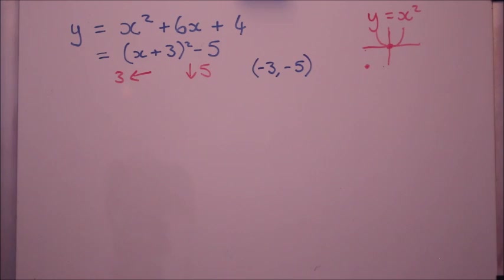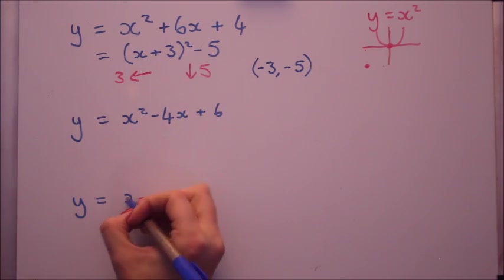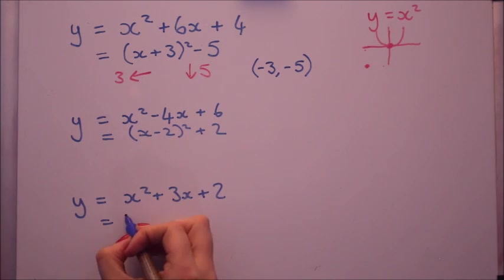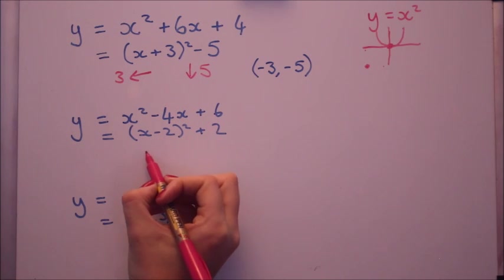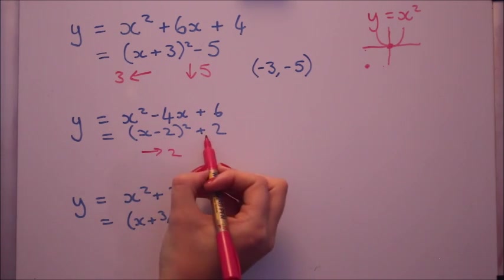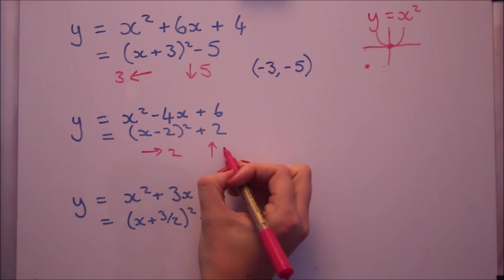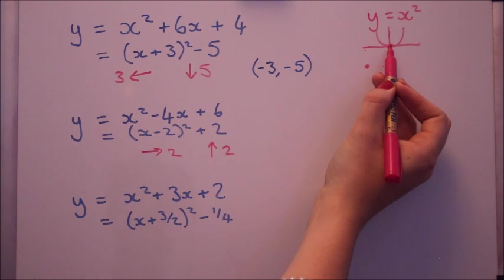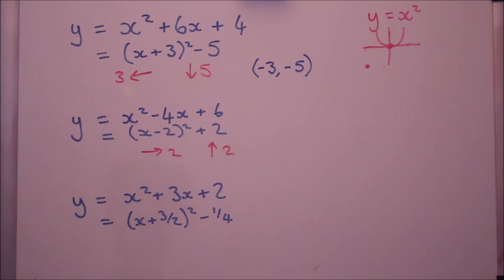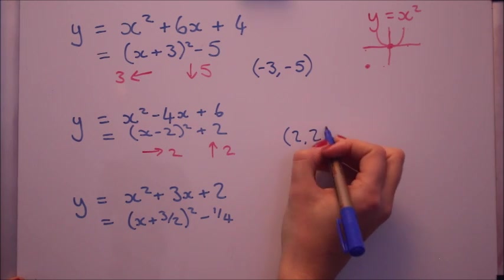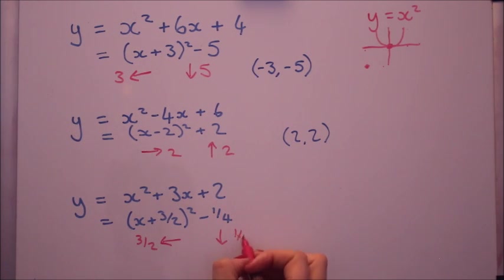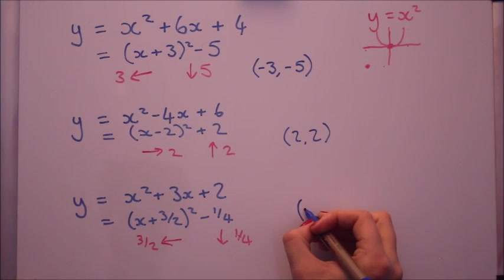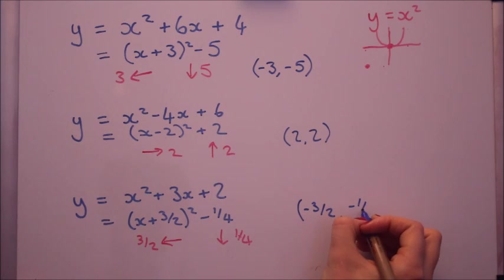Let's do that for the other two that we did at the beginning. Looking at these then, we've got a minus on the inside, that's going to move it right two, and a positive on the outside, that's going to move it up two. So going back to the origin, it's going to move right two and up two, the turning point will be at two, two, both positive. And on this one here, we've got positive on the inside, that moves it left by three over two, and down one over four. So the turning point will be at minus three over two, minus one over four.